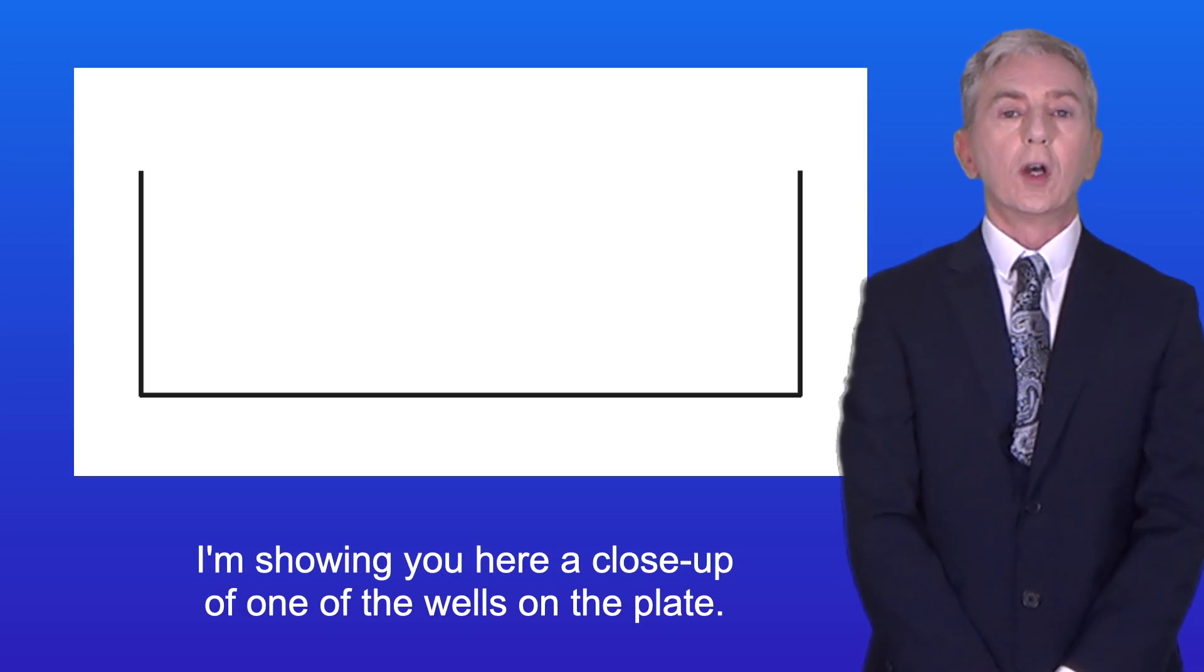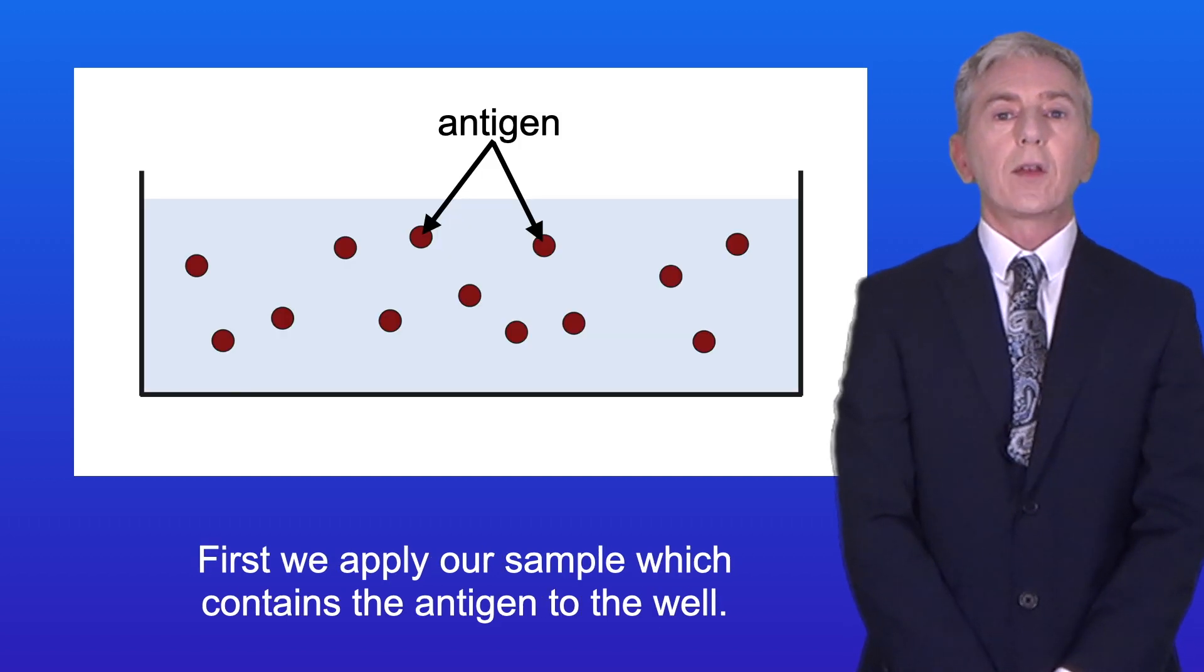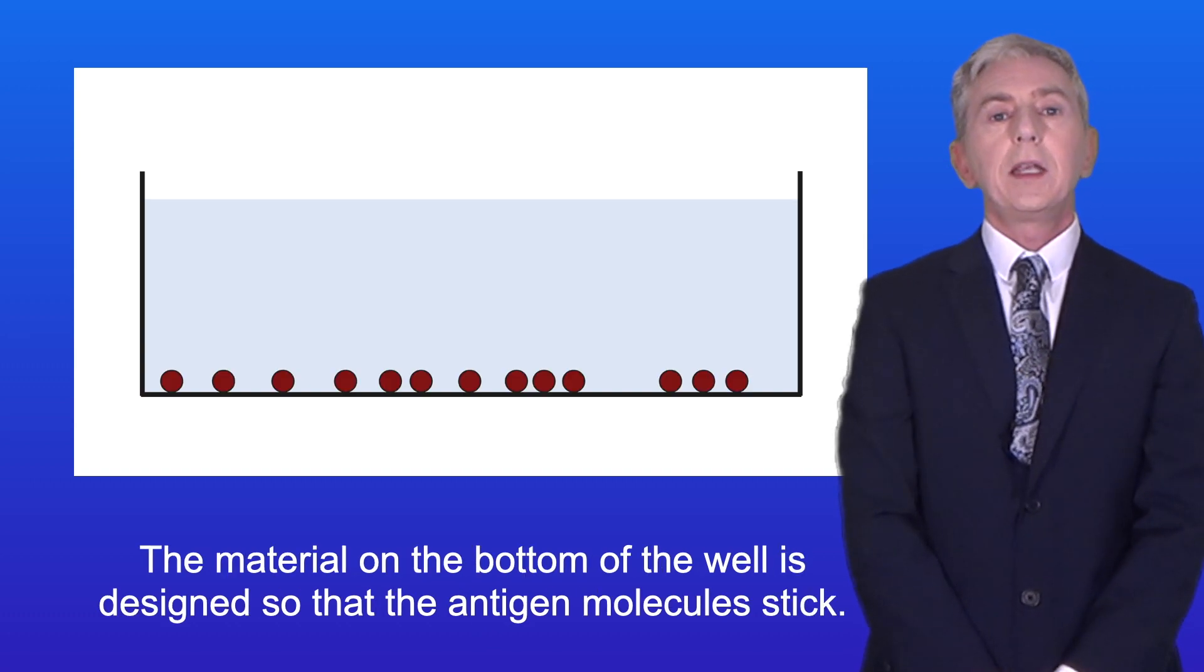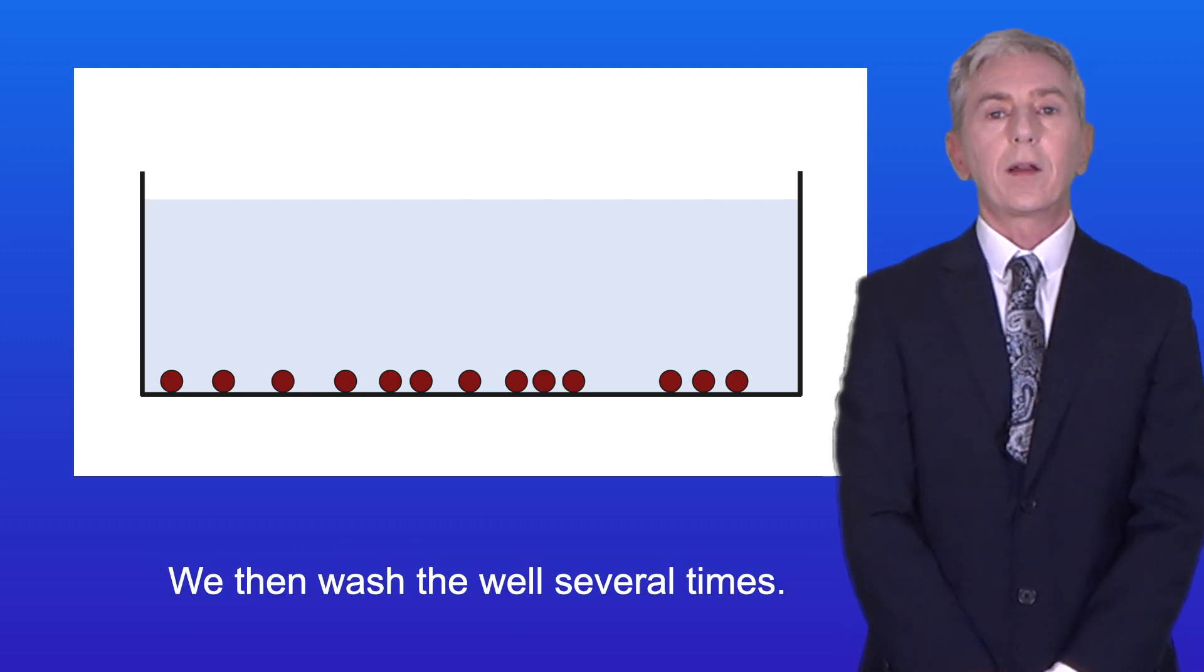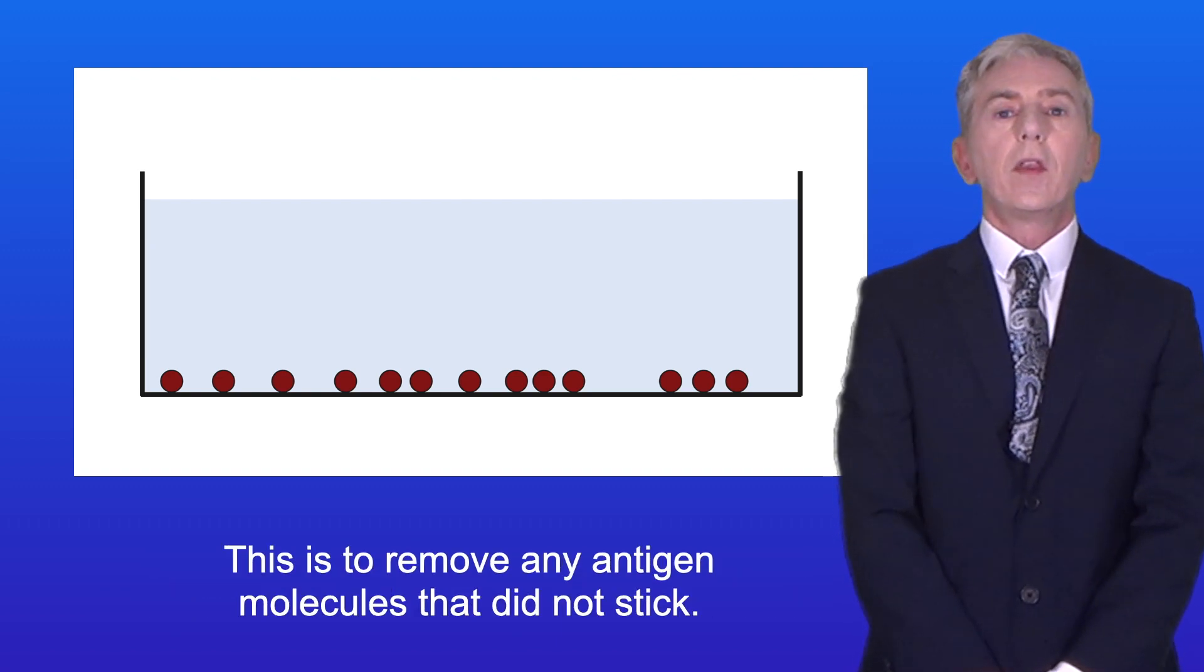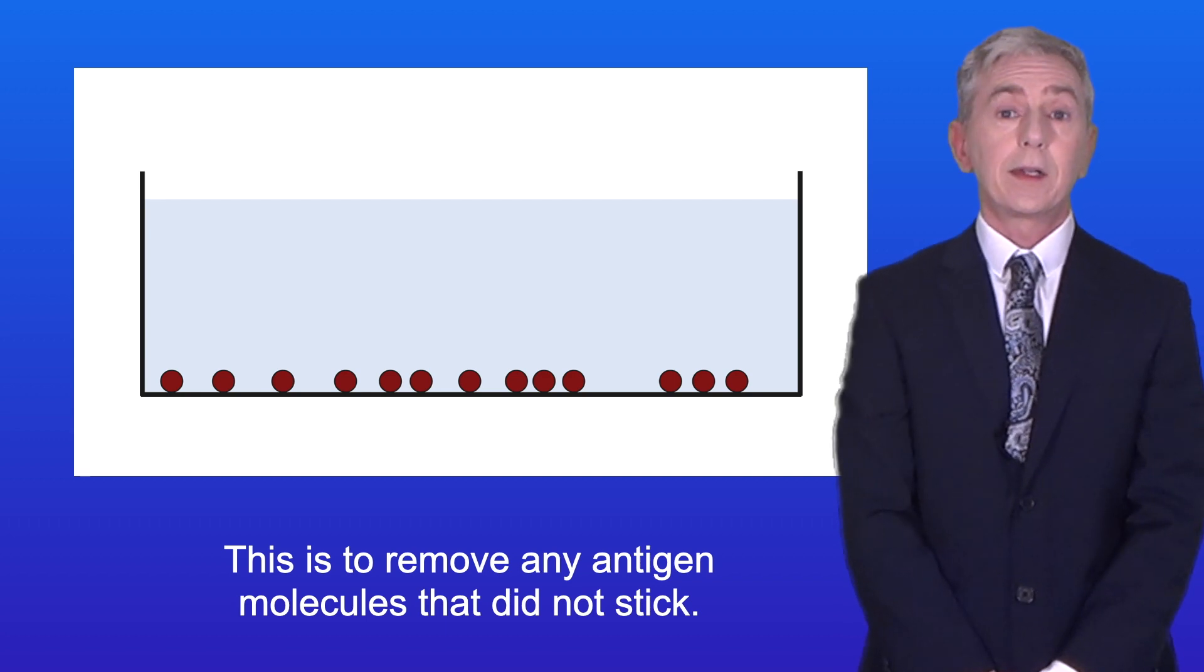I'm showing you here a close-up of one of the wells on the plate. First, we apply our sample, which contains the antigen, to the well. The material on the bottom of the well is designed so that the antigen molecules stick. We then wash the well several times to remove any antigen molecules that did not stick.